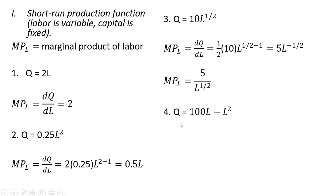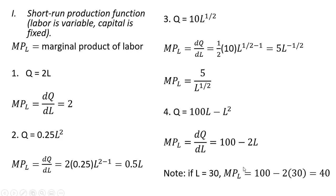Example 4. The marginal product here: the derivative of 100L is 100. The derivative of L squared — bring the 2 down in front and subtract 1 from the exponent — leaves us with minus 2L. So the marginal product of labor is 100 minus 2L. We can evaluate this at a given value; if L equals 30, plugging 30 in gives a marginal product of 100 minus 60, or 40.